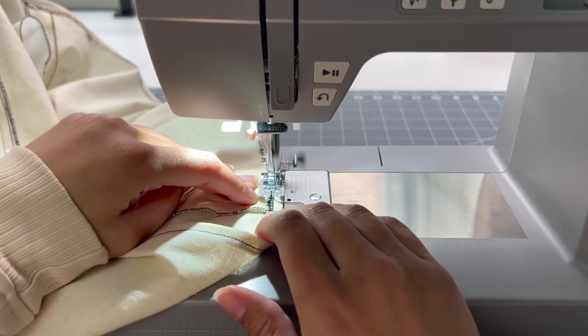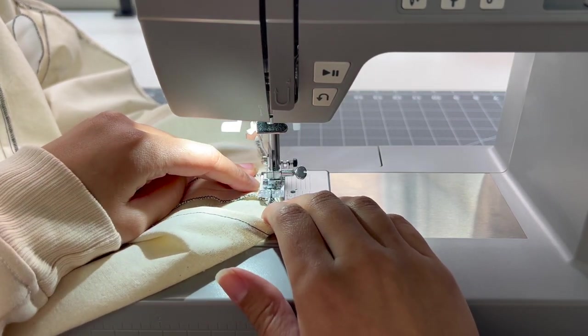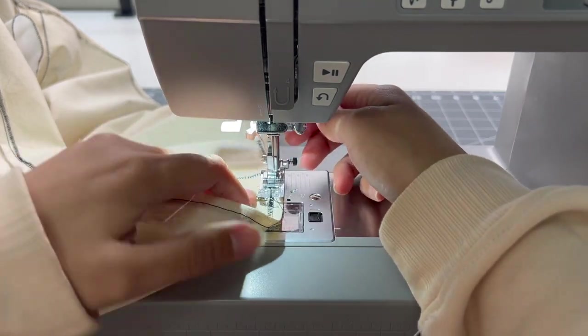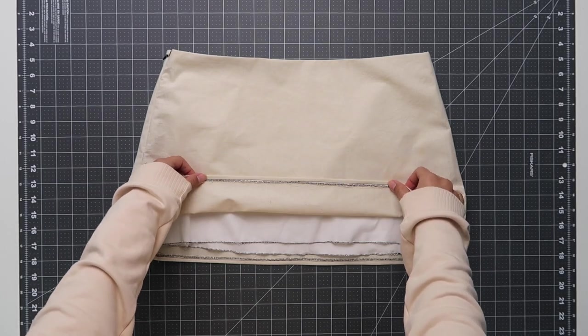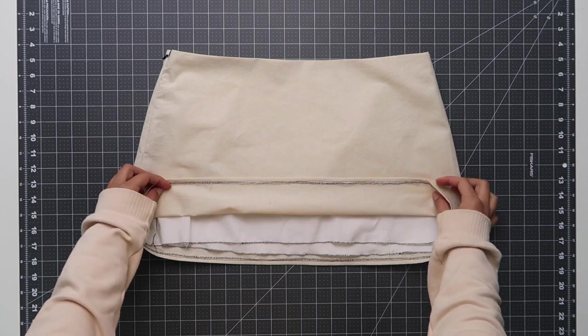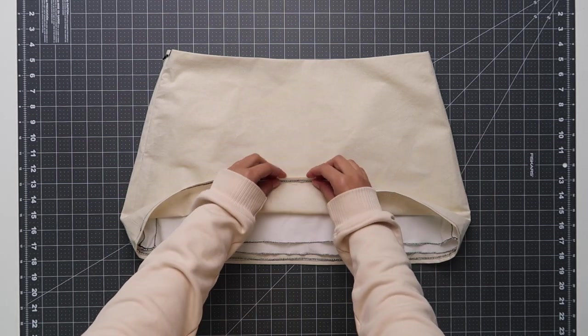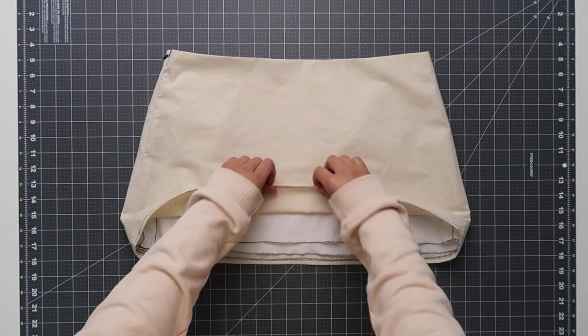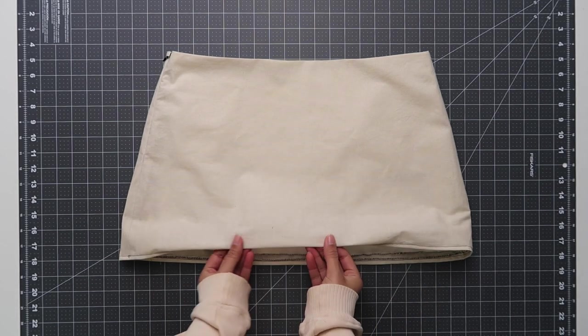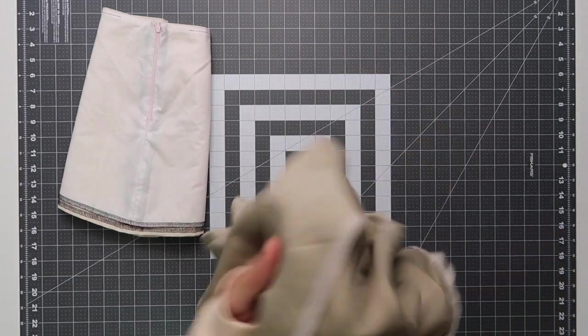However, if you want a slightly cleaner finish you could do a double folded hem and then that would conceal all of your stitch work, so it might be worth adding a couple of centimeters to the seam allowance of the hem if you want to finish it slightly differently.